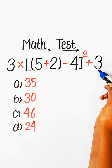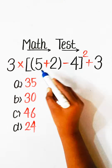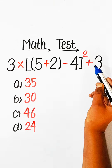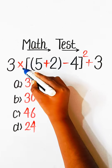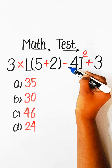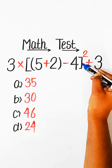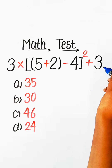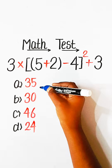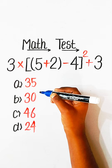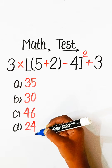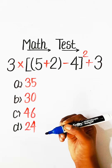Hello everyone. In this video, we will solve this basic math expression: 3 multiplied by under bracket 5 plus 2, plus minus 4 squared, plus 3, equals to what? Option A: 35. Option B: 30. Option C: 46. Option D: 24.